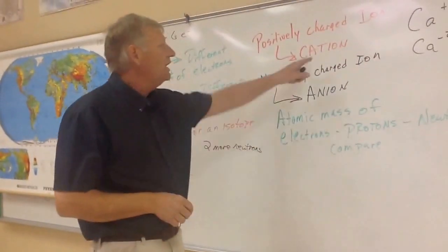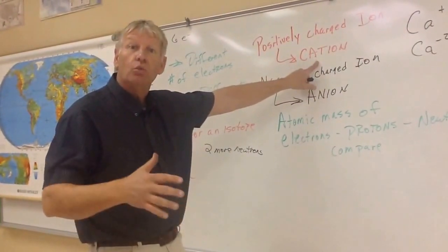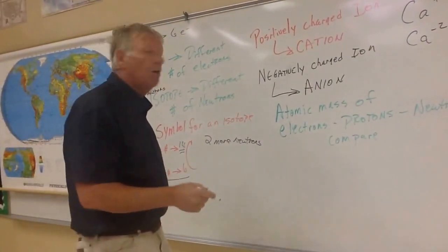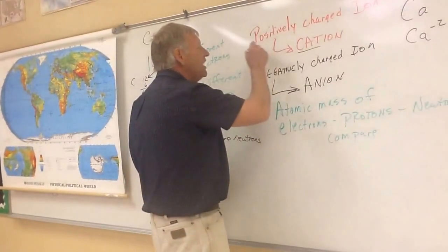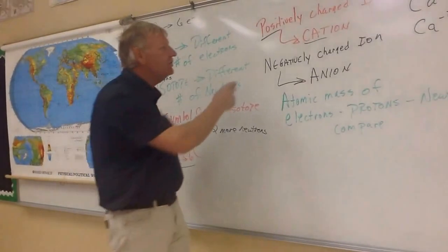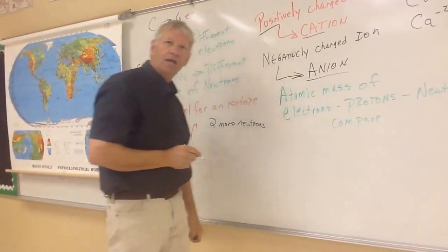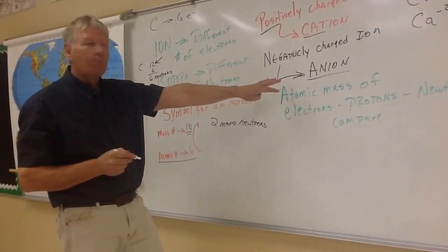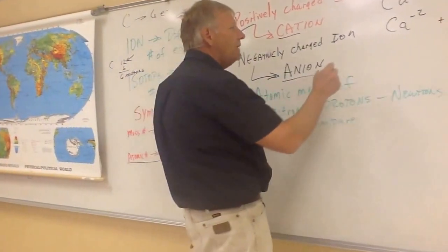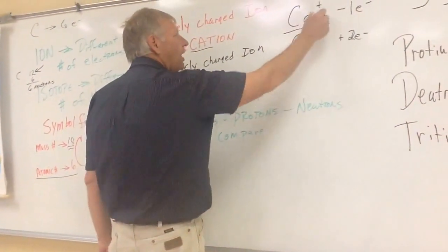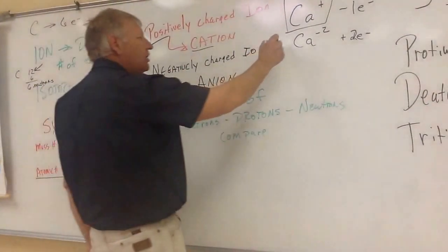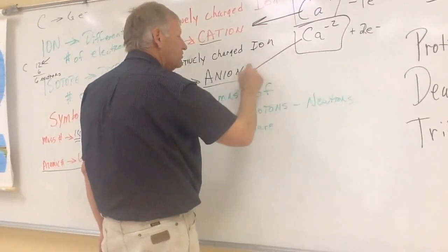A positively charged ion is called a cation — and later on we get the word cathode from this. The way I always remember it is: cats have paws. So a positively charged ion is a cation, because cats have paws. A negatively charged ion is called an anion — and later we get the word anode, like on a battery, where the cathode is the positive side and the anode is the negative side. So Ca-plus is a positively charged ion — that's a cation. A negatively charged ion is your anion.